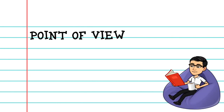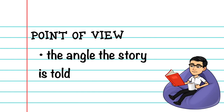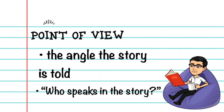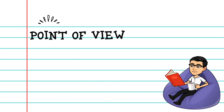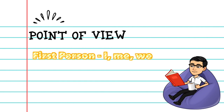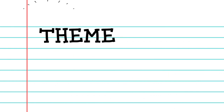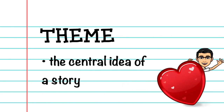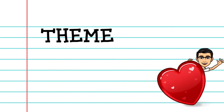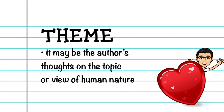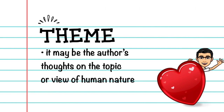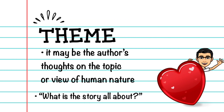Next, point of view. This is the angle the story is told. The question here is, who speaks in the story? The story can be told in first, second, or third person point of view. Theme may be the author's thoughts on the topic or view of human nature. It answers the question, what is the story all about?